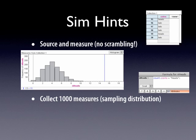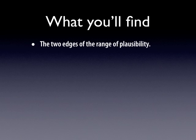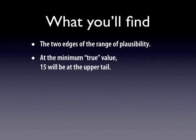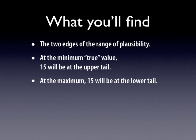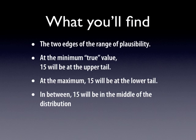When you come to the end, you're going to find the two edges of this range of plausibility. At the minimum true value — when it's as small as possible — 15 is going to be at the top of the distribution, at the upper tail. At the maximum, 15 is going to be at the lower tail. And in between, 15 will be in the middle of the distribution. When 15 is in the middle of the distribution, that's exactly what we mean by plausible. So what you're going to get is an interval — a range of probabilities that we think are plausible for getting 15 out of 20 heads. And that's going to be the main homework. Got it? Good.